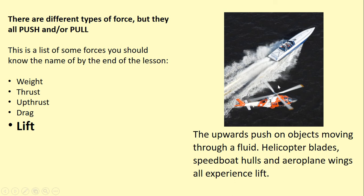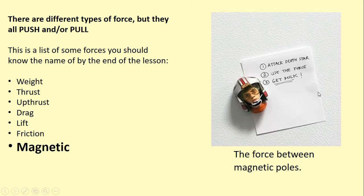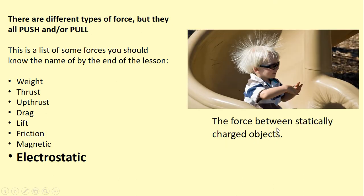Friction is holding this spoon on this girl's nose. Friction is the resistance to surfaces sliding past each other. We have magnetic forces, that's the force between magnetic poles. Electrostatic forces are the forces between statically charged objects.